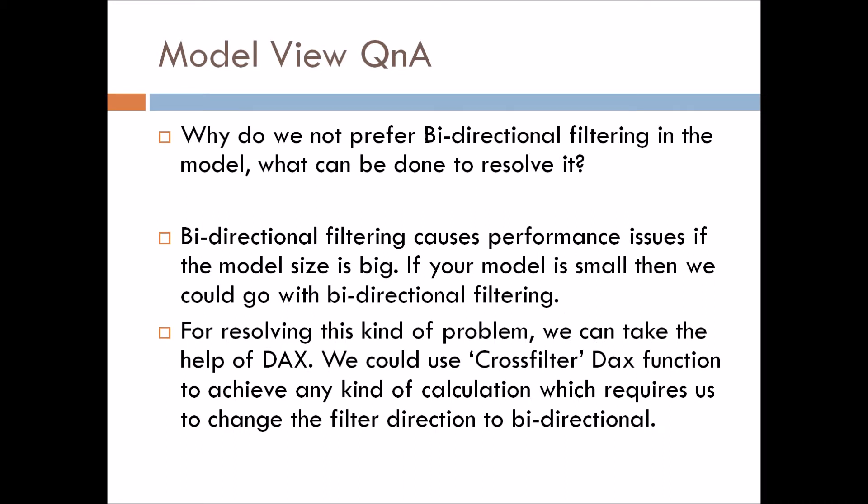The next question is: Why do we not prefer bi-directional filtering in the model and what can be done to resolve it? Bi-directional filtering causes performance issues if the model size is big. So if your model size is huge, in that case we should not consider bi-directional filtering, but if your model size is small then we can go ahead and use bi-directional filtering also.